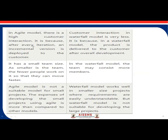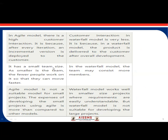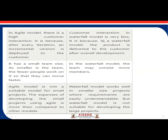In the agile model, there is high customer interaction because incremental versions are continuously deployed to the customer. In the waterfall model, customer interaction is very less because the product is delivered only after overall development is complete. Agile has a smaller team size so fewer people can move faster, whereas in waterfall the team may be larger since every phase requires different team members — design, coding, and testing teams are all separate.